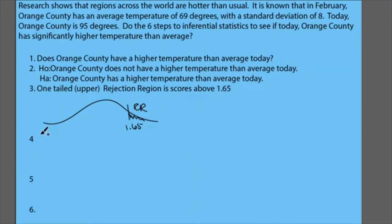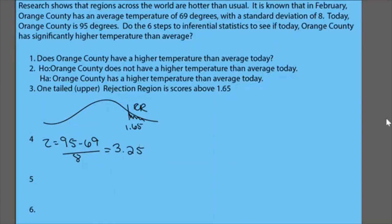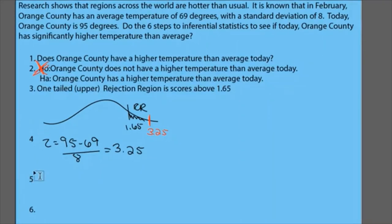So now we're going to do the math. Remember it's 95 minus 69 divided by 8. Make sure you know how to get those numbers from the prompt. We calculated this before so I'll cut to the chase — the answer is 3.25. Now I want to see where that is in my picture, and 3.25 is right out here in the rejection region. Since that's where my score is, I now know that I'm going to reject the null. I'll cross it off — reject the null because I'm in the rejection region. For step five: I'm going to reject the null.